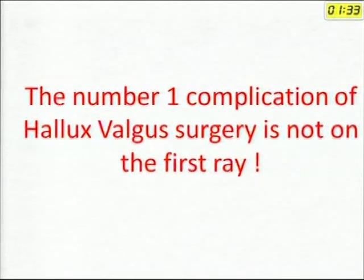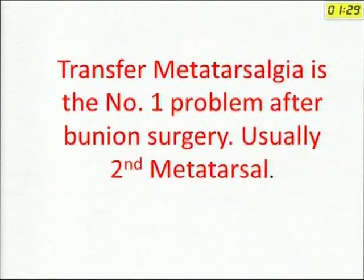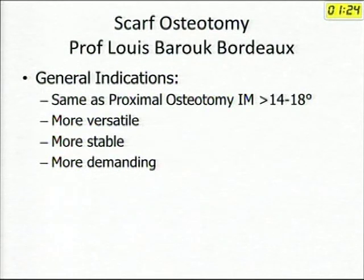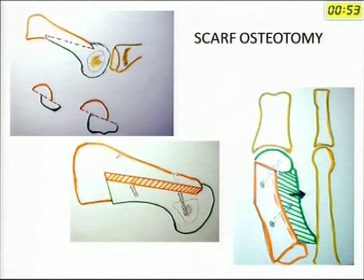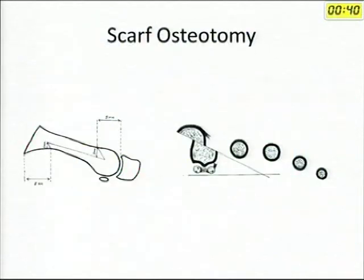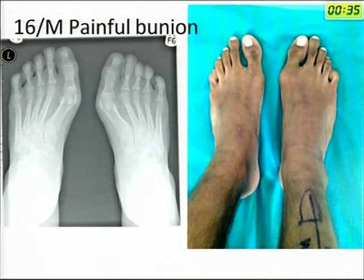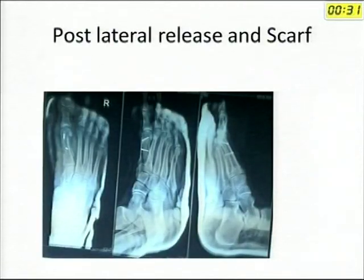The main complication of hallux valgus surgery is not on the first ray itself — it is mostly on the second ray in the form of transfer metatarsal pain. In view of this, a scarf osteotomy was proposed by Professor Louis Baruch in Bordeaux. The indications are much the same as for normal osteotomies, but most foot and ankle surgeons across Europe and many centres in America now do it as a standard procedure for all hallux valgus operations because it is more versatile and more stable, though more demanding as it is a more complex osteotomy. You essentially do a double chevron, with the advantage of a big lateral shift. You can lower the metatarsal, so metatarsal pain is less. You can also rotate the distal fragment to correct the DMAA. Here is a 16-year-old patient with a painful bunion; we did a scarf osteotomy and lateral release with excellent correction.